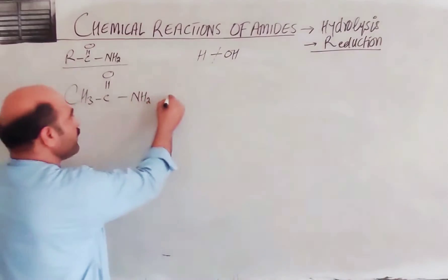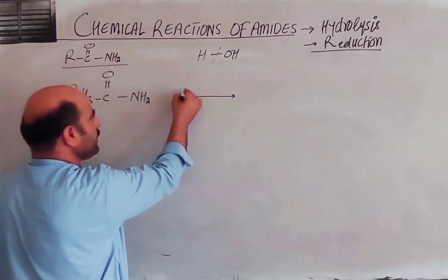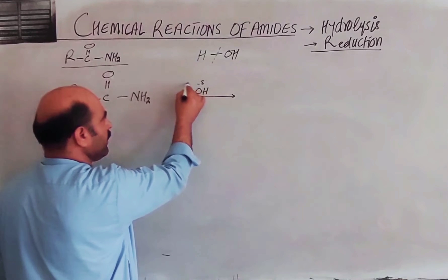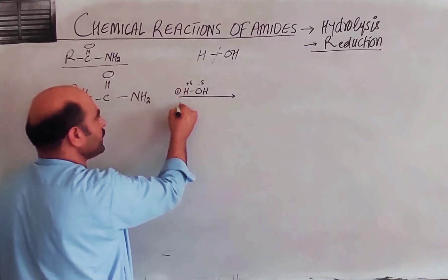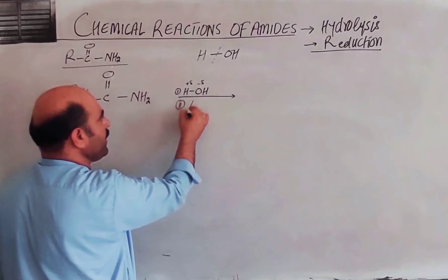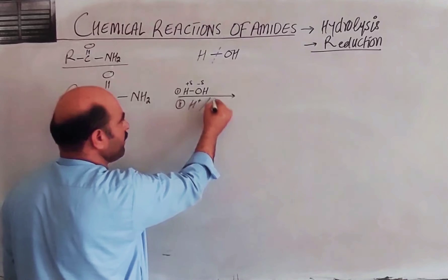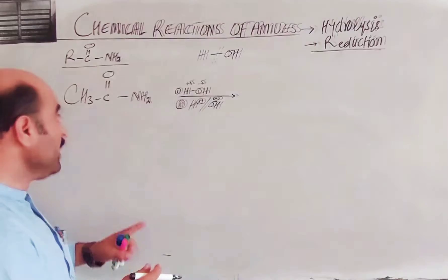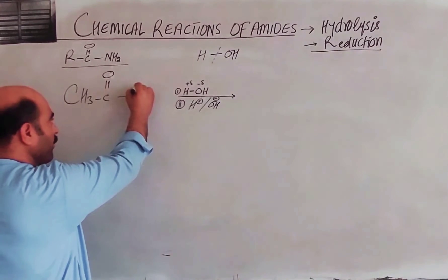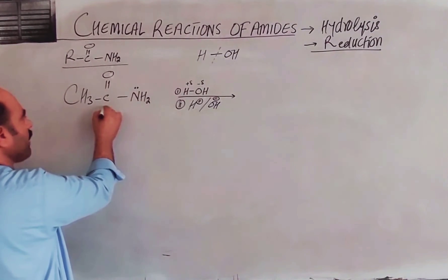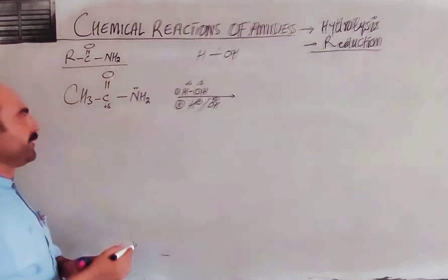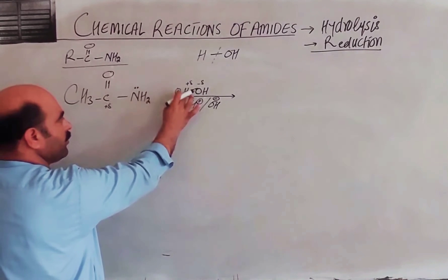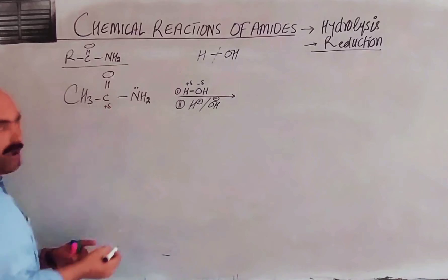In hydrolysis, the hydrogen-oxygen bonding of water is broken. The medium is either acid or base. Nitrogen stores a lone pair of electrons. With respect to carbon and oxygen, carbon has a partial positive charge. This lone pair of electrons will attack on the hydrogen of water, and the oxygen will be attached to carbon.